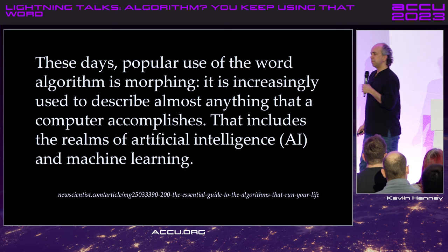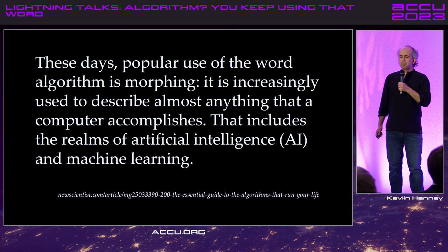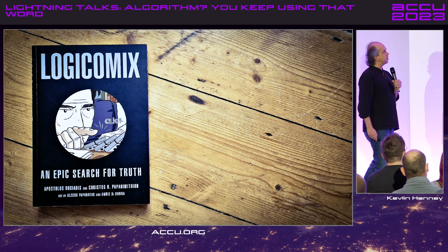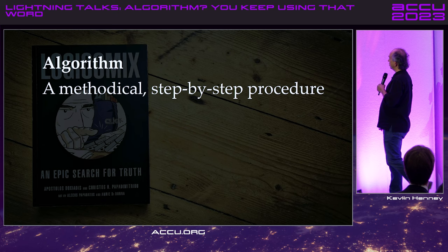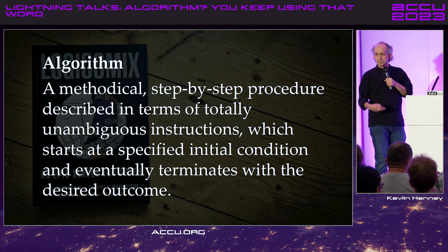My mother-in-law recently presented me with a new word. She said, there's something — it's 'algorithmic doll.' And I said, that's strangely appropriate. We've been using those for millennia. There's a good definition in this rather wonderful book about the logic and limits of logic, framed as a biography of Bertrand Russell — an excellent graphic novel that breaks the fourth wall. It defines an algorithm as: a methodical step-by-step procedure, described in terms of totally unambiguous instructions, which starts at a specified initial condition and eventually terminates with the desired outcome. That means things like BOGO sort do not qualify as algorithms, because they are not guaranteed to terminate.